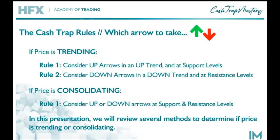Now, to utilize Cash Trap, there are a few basic rules. We try and keep this really simple, and it comes down to these two primary rules. If the price is trending, rule number one is that we consider up arrows in an uptrend and at key support levels. Rule number two is to consider down arrows in a downtrend and at resistance levels. If price is consolidating, we really only have one rule, which is to consider up or down arrows at support and resistance levels.